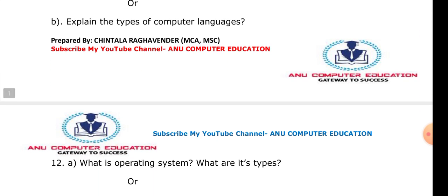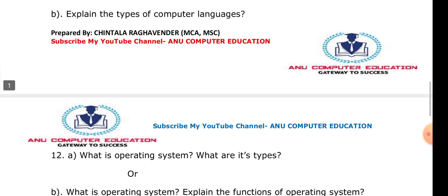One very important question is: what is an operating system and its types? An operating system is an interface between the user and the computer. Since a computer is a hardware device, we need software to operate it — that software is the operating system. Without an operating system, a user cannot interact with the computer. Examples include UNIX, Linux, and Windows. Different types of operating systems include: distributed OS, batch processing OS, multi-tasking OS, multi-programming OS, and time-sharing OS. You can expect both a short and a long answer from this topic, so learn the definition, advantages, and disadvantages of each type.